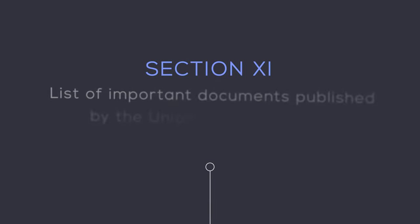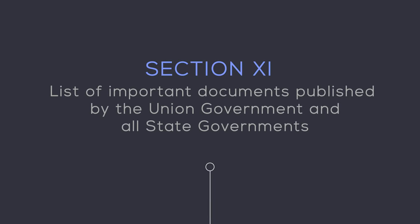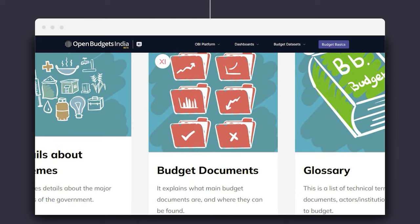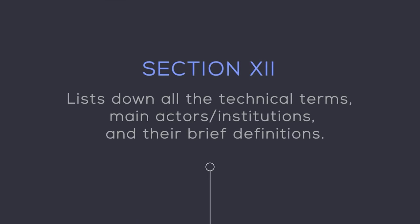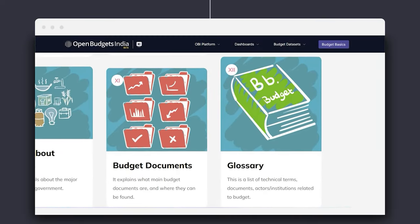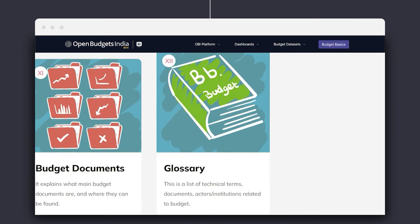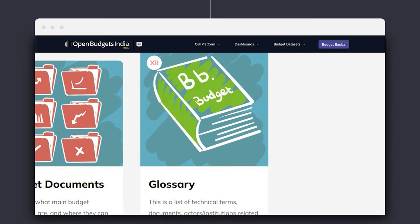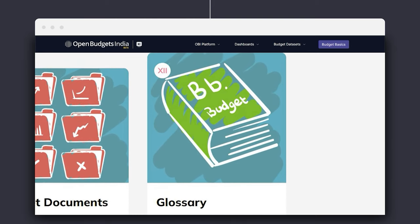Budget documents are an important source of information on government schemes and programs. You can explore Section 11, which provides the list of important documents published by the Union Government and all state governments as well as their respective sources. The last section is the Glossary, which lists all the technical terms, main actors or institutions and their brief definitions. If you have come across any term in any of the previous 11 sections that you find difficult to understand, you can get an explanation of the same in this section.